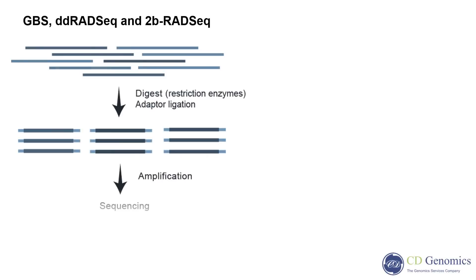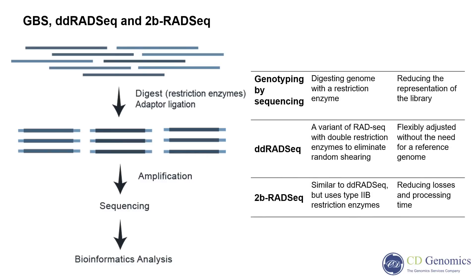Genotyping by sequencing, double digest restriction site-associated DNA sequencing, and 2b-RADseq methods apply restriction enzymes to generate fragments for sequencing. GBS, also known as reduced representative sequencing, is a strategy for generating whole genome high-throughput sequencing data by sequencing only a small portion of the genome, effectively reducing the cost of analysis.